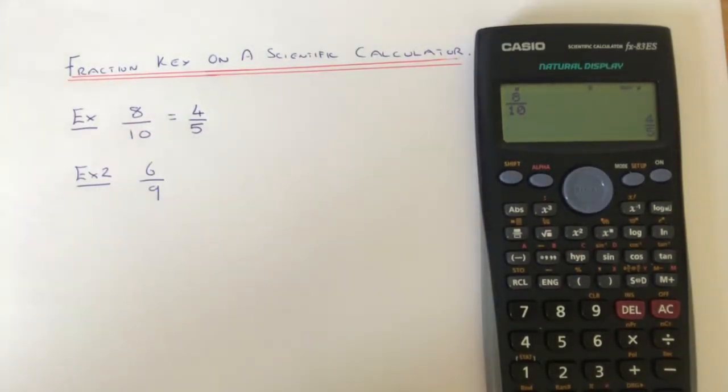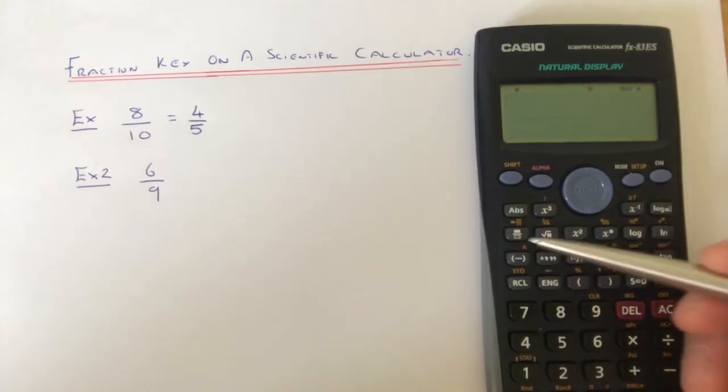Let's do example 2. Let's type in 6 ninths this time. We'll delete this one off. Again, hit the fraction key,